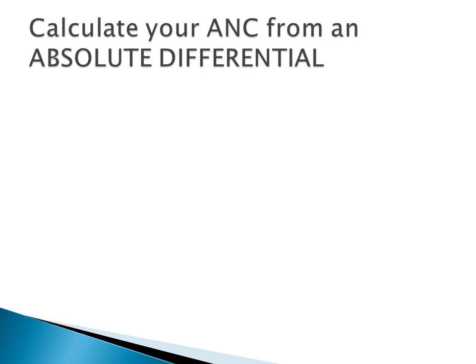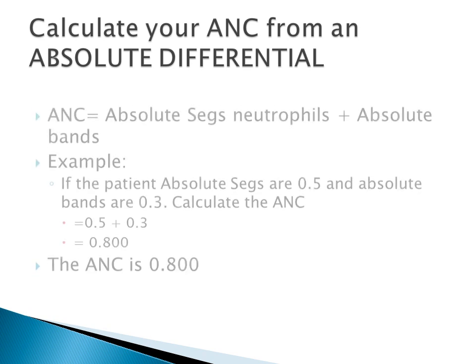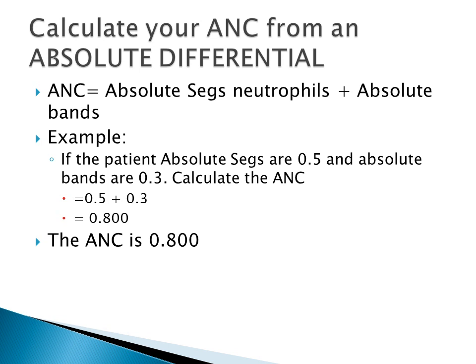In cases where you are given the absolute differential, the formula is to simply add the absolute seg neutrophils and the absolute band. For example, a patient with an absolute seg of 0.5 and an absolute band of 0.3: you add 0.5 plus 0.3, which equals 0.8. So the absolute neutrophil count is 0.8.